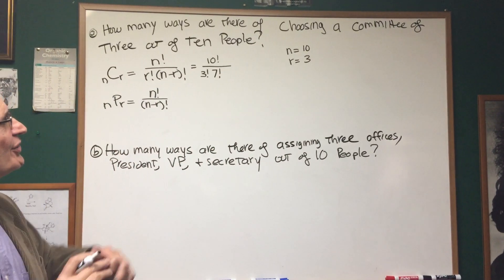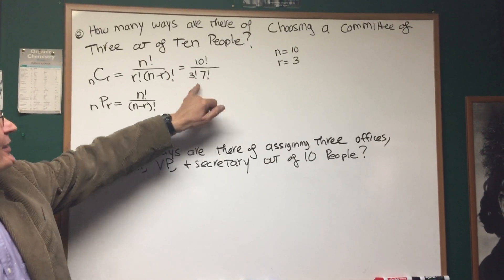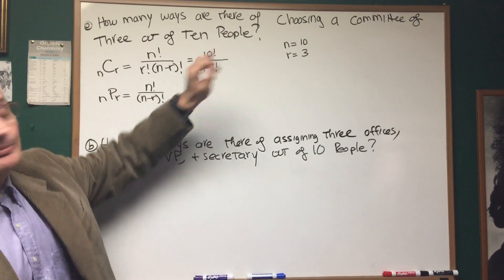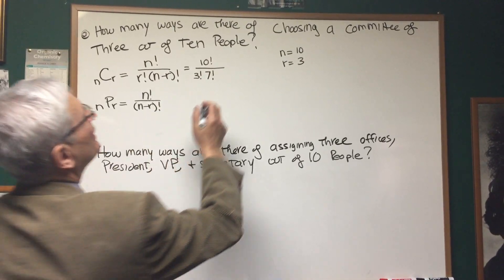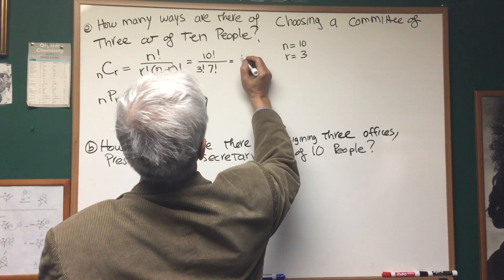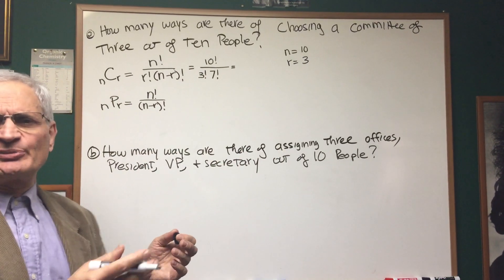It's a nice little trick to know that the two numbers in the denominator of the combination formula always add up to the number in the numerator: three factorial, seven factorial. So let's just figure this out. This is going to be ten factorial. What is ten factorial mean? Ten times nine times eight times seven times six times five times four times three times two times one.